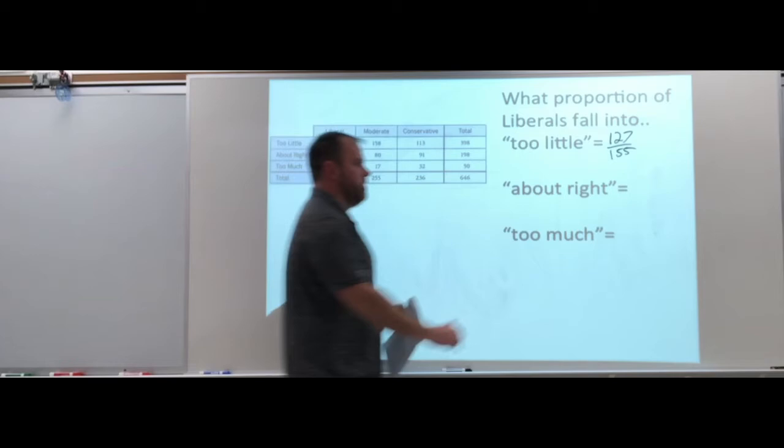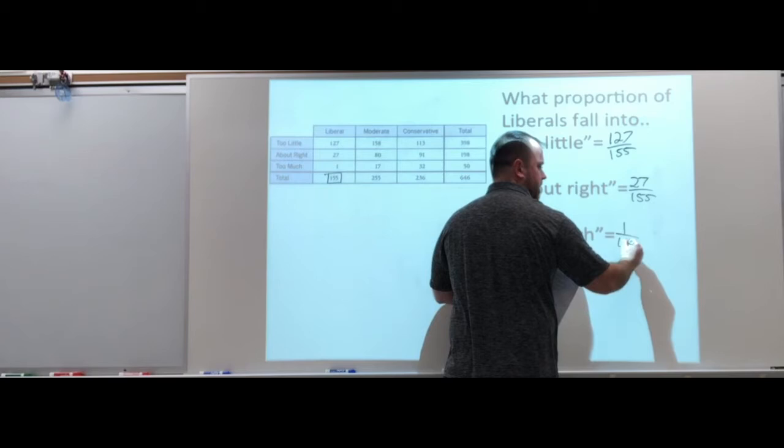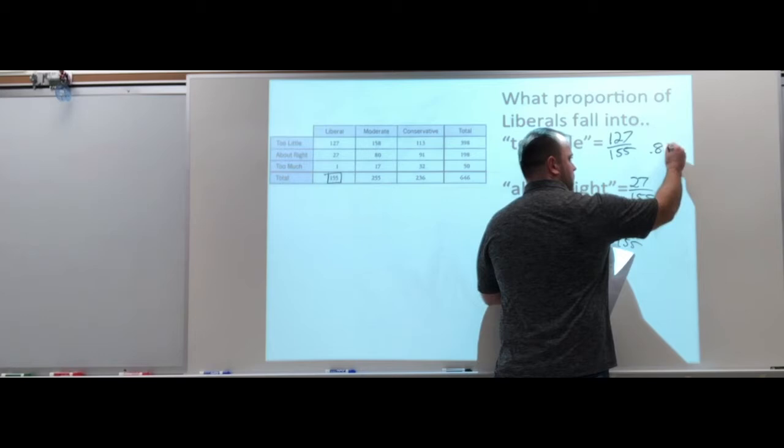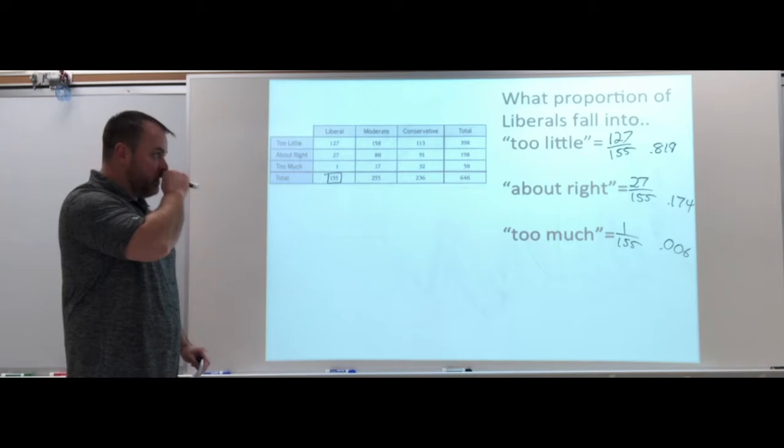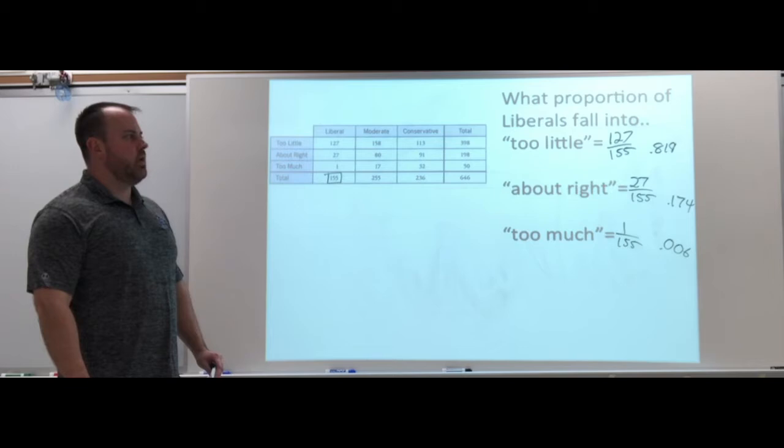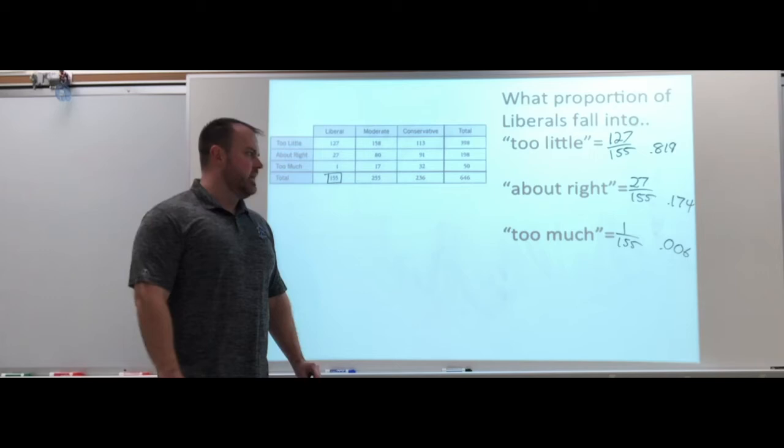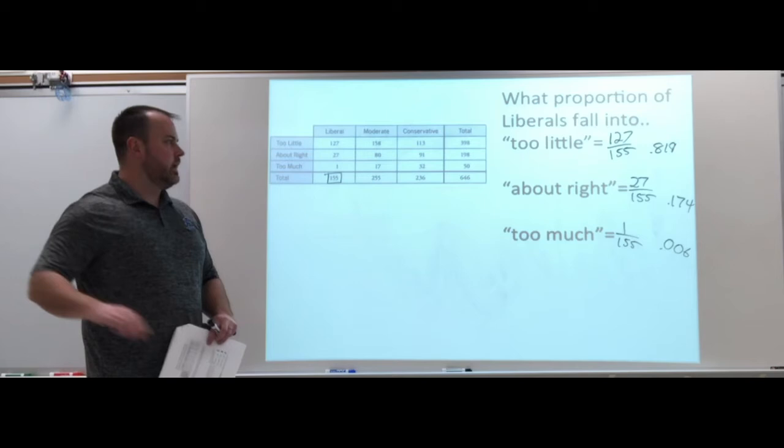127 divided by 155. If I'm looking at those, 0.819, 0.174, and 0.006. So if you're looking at just the liberal category, by a good amount too little is the highest proportion. About 82% are saying we spend too little on the environment. Less than 1% is saying too much.